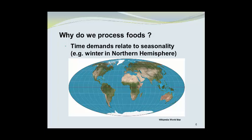Time demands tend to relate to seasonality. When it's winter in the Northern Hemisphere, there is very little fresh fruit available, so the demand lies in the Northern Hemisphere. But the source could be in the Caribbean. By processing foods or being able to transport foods through improved transportation techniques, we can align the source with the demand.